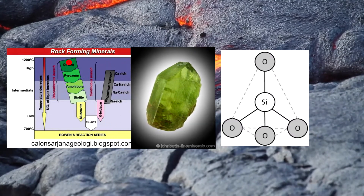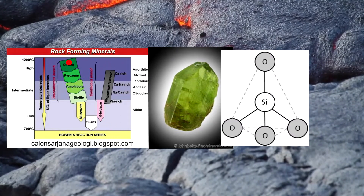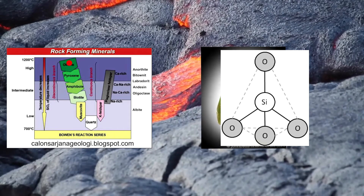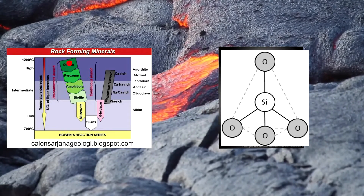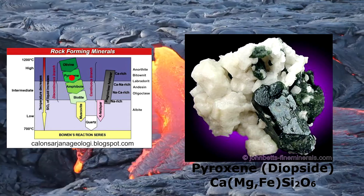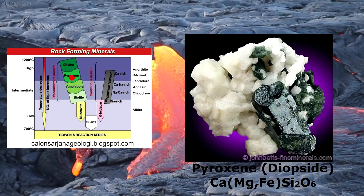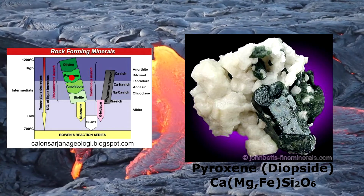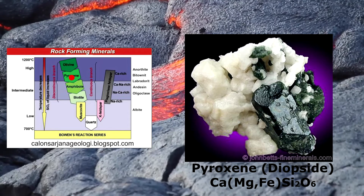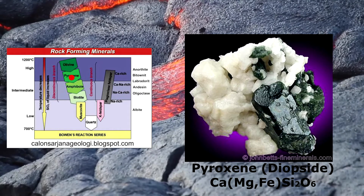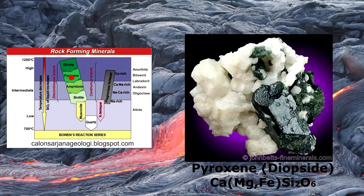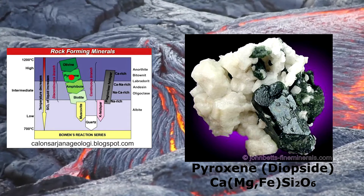Say we keep cooling these olivine crystals. Eventually, they would react with the silica in the surrounding magma to form the pyroxene group, the next stop of the discontinuous branch. So long as there is silica in the magma solution to react with the newly formed crystals, and cooling is slow, the path can continue.